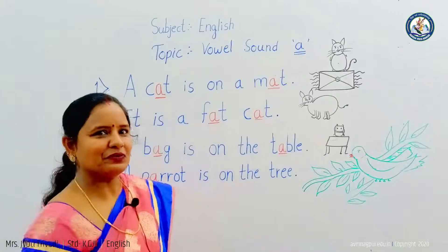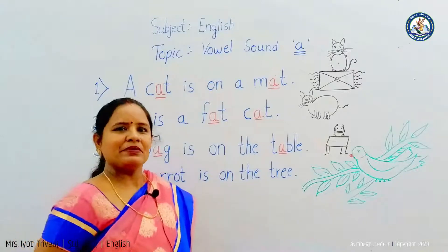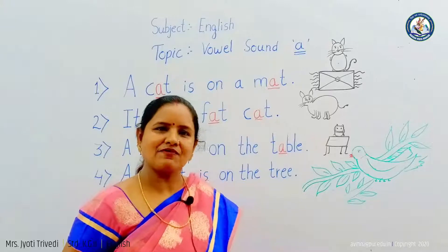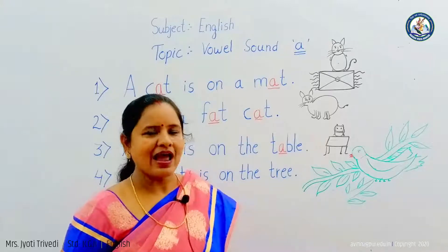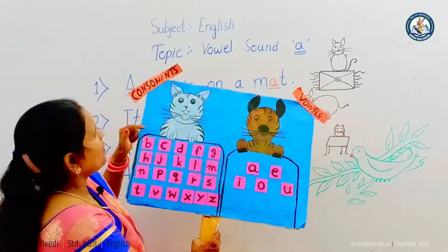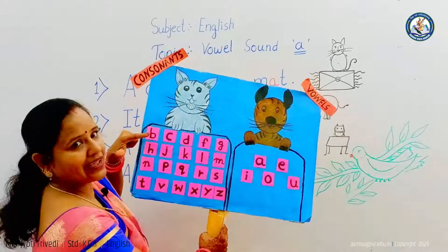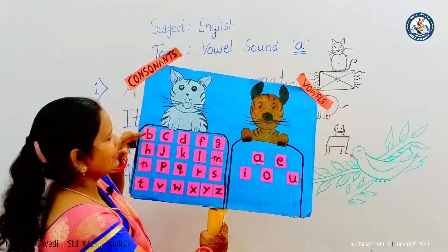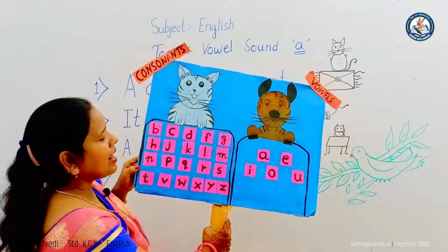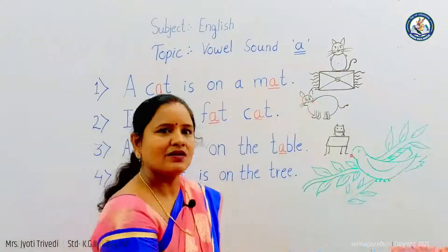Hello children, today I will introduce you to the vowel sound A. In our previous class, you all learned the alphabet. There are twenty-six letters in our English alphabet — twenty-one are consonants and five are vowels. See the chart: there are two cats, a white cat and a brown cat. The white cat carries consonants and the brown cat carries vowels. Consonants are more and vowels are less, but without vowels we cannot make words.